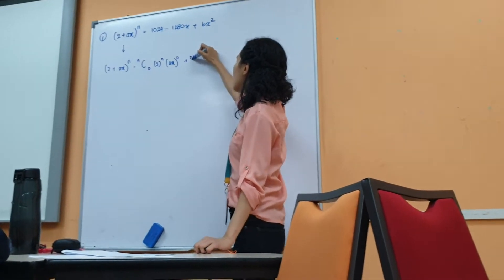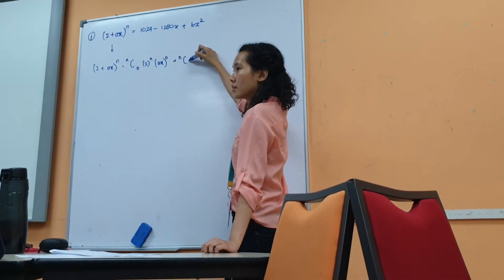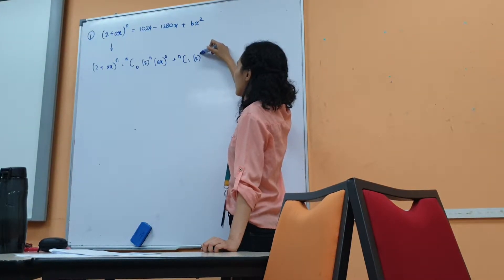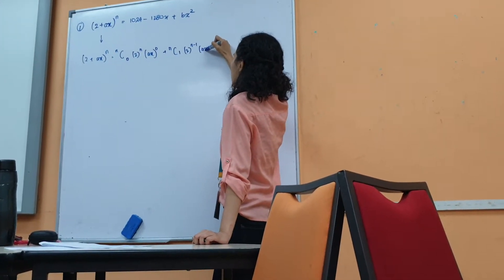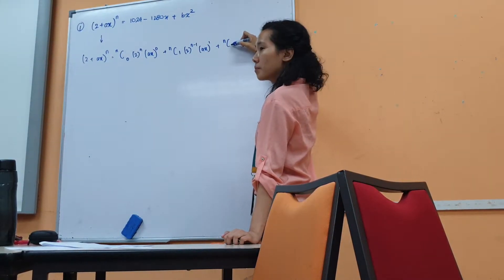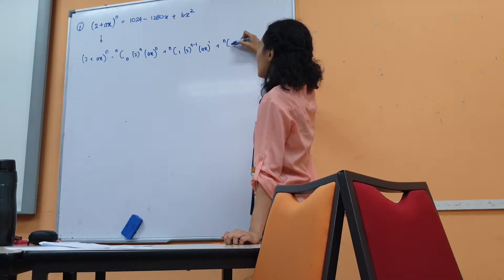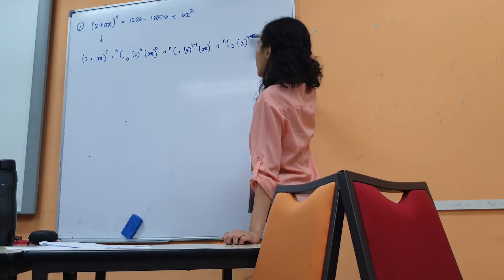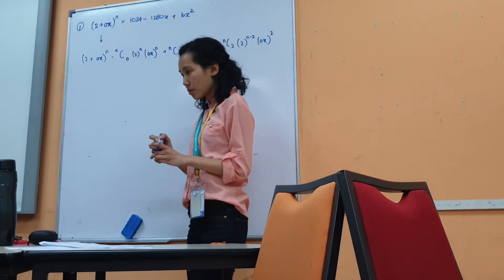Next, we continue. N C 1 times 2 to the power of N-1 times A times X to the power of 1. And N C 2, 2 to the power of 2, A times X to the power of 2. Everybody okay?